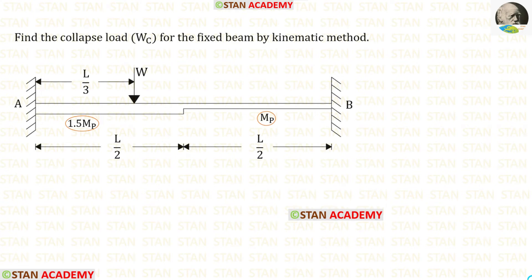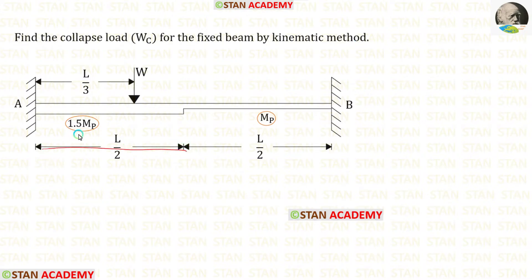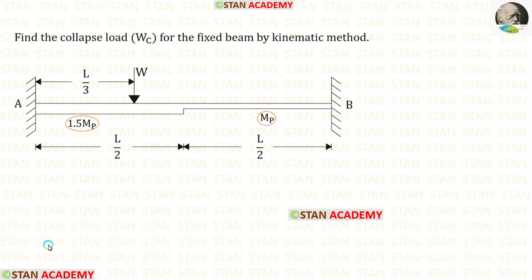Hello everyone. Today we are going to see a problem based on plastic analysis. Let us see the question. Find the collapse load for the fixed beam by kinematic method. A fixed beam of varying cross section is given. For the first half we have 1.5 MB, and for the second half we have MB. In this fixed beam we have a point load W at a distance of L upon 3 from the fixed end A.